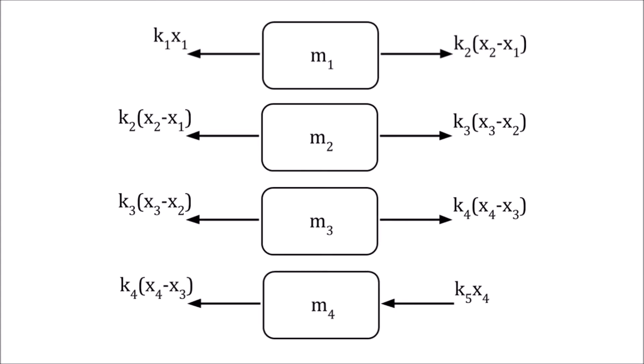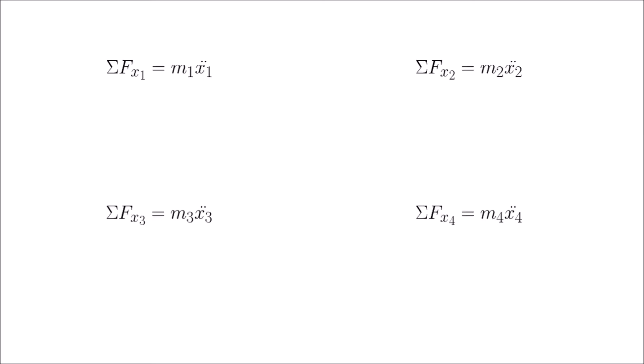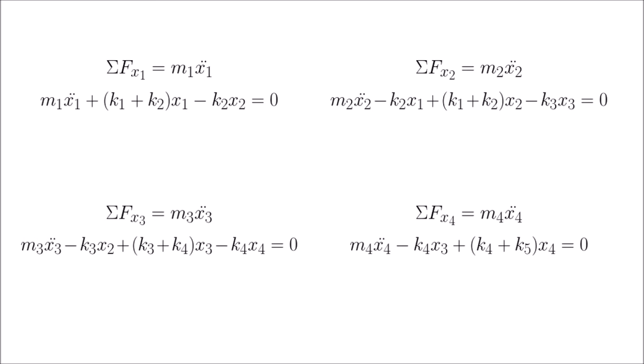First, we'll draw the free-body diagram for each mass, and then we'll use F equals MA to derive our equations of motion. You can see from the equations of motion for each mass that the acceleration of a given mass is related to the position of its neighboring masses, indicating that this system is indeed coupled.